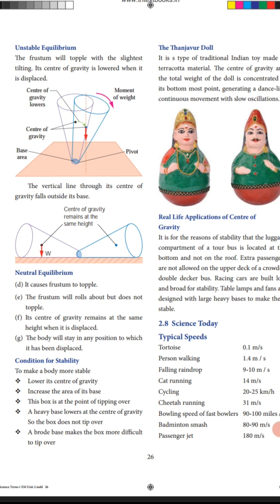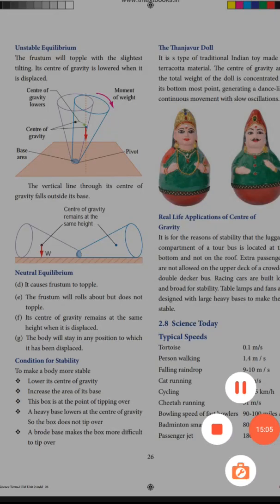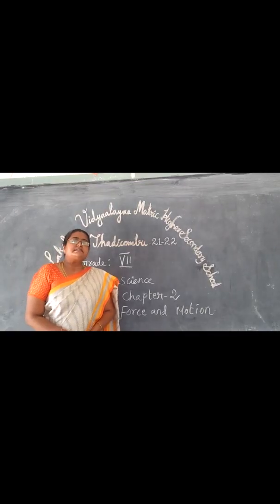Real-life applications of center of gravity: for reasons of stability, the luggage compartment of a tour bus is located at the bottom and not at the roof. Extra passengers are not allowed at the upper deck of a crowded double-decker bus. Racing cars are built low for stability. Table lamps and fans are designed with large heavy bases to make them stable.